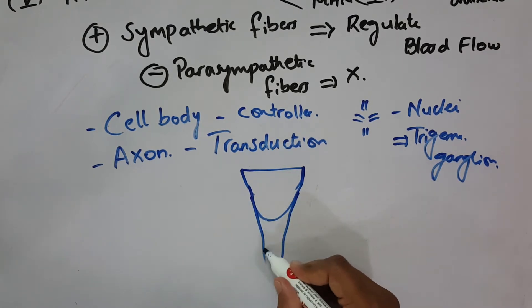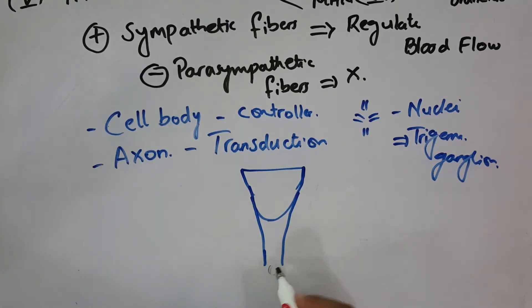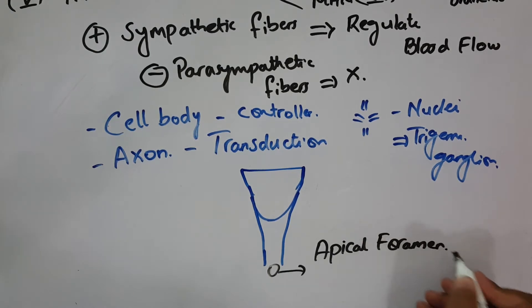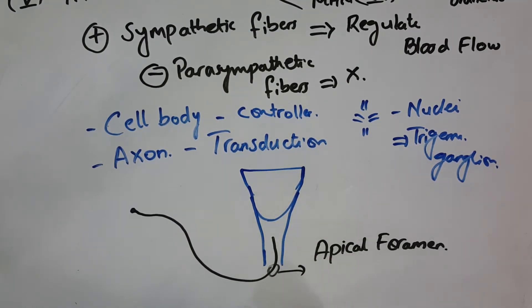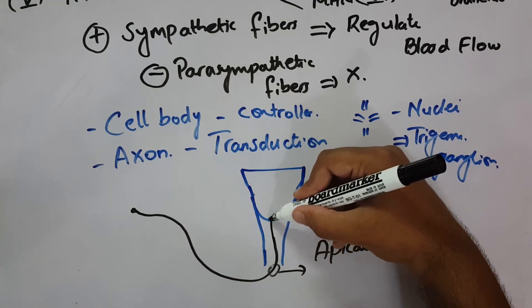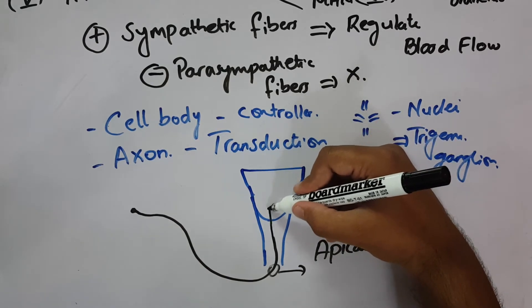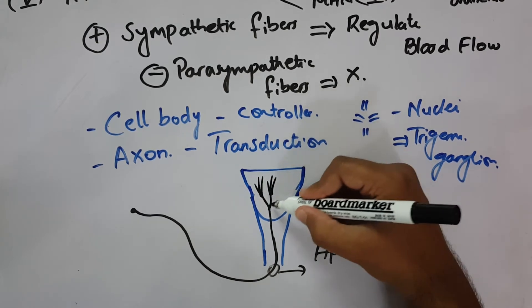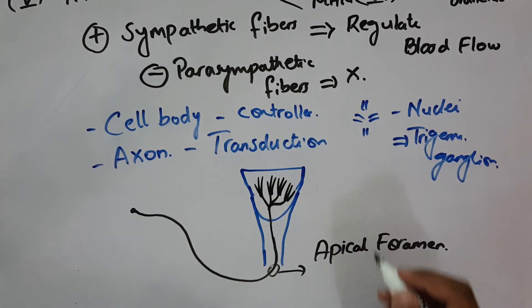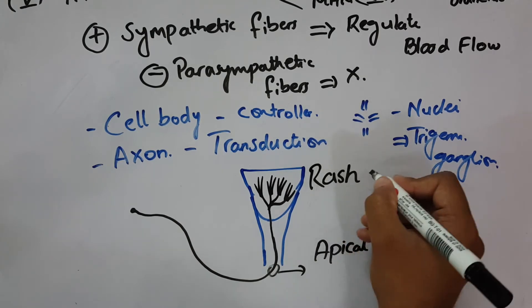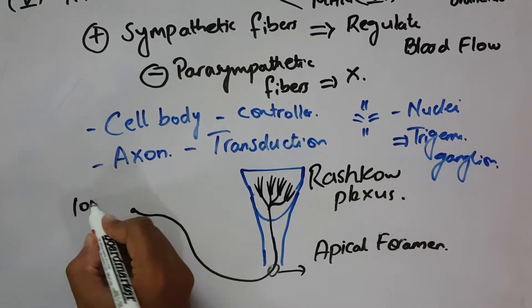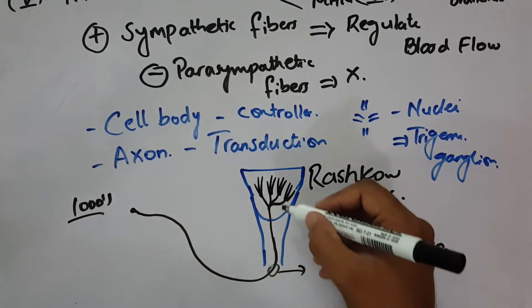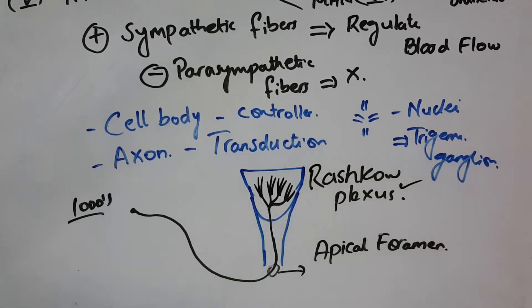Here I have drawn the basic structure of the tooth. This region is known as the apical foramen, which is right at the apex of the root. The axons, in thousands, enter the apical foramen and they continue forward to the coronal dentin. When they reach the coronal dentin, they fan out, and this fanning is known as the Raschkow plexus.